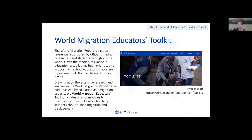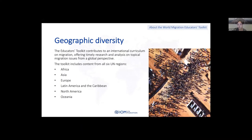Given the report's relevance in education and the feedback the Division has been receiving from educators over the years, a toolkit has been prioritized to support high school educators in accessing report materials tailored to their needs. The World Migration Educators Toolkit includes a set of modules to practically support educators teaching students about human migration, and like the World Migration Report, the toolkit has also been peer reviewed by migration experts and educators in the field. The toolkit contributes to an international curriculum on migration, offering timely research and analysis on topical migration issues from a global perspective.